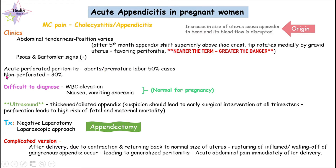If a pregnant woman has acute perforated appendicitis with peritonitis, usually these women will abort the pregnancy, terminate the pregnancy, or have premature labor in about 50% of cases. If it is non-perforated appendicitis in a pregnant woman, the chance of abortion and premature labor is about 30%.